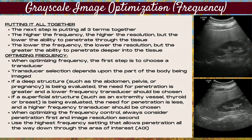Now let's talk about how to optimize the frequency control. When optimizing frequency, the first thing to consider is choosing a transducer. Transducer selection depends on the part of the body being imaged. If a deep structure such as the abdomen, pelvis, or a pregnancy is being evaluated, the need for penetration is greater and a lower frequency transducer should be chosen. If a superficial structure such as an extremity vessel, thyroid, or breast is being evaluated, the need for penetration is less and a higher frequency transducer should be chosen. Always consider penetration first and image resolution second, and always use the highest frequency setting that allows penetration all the way through the area of interest.